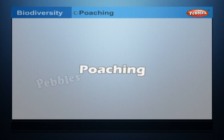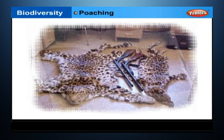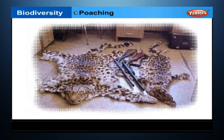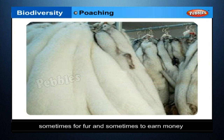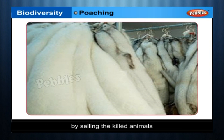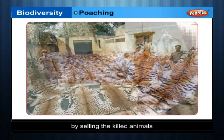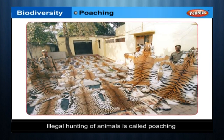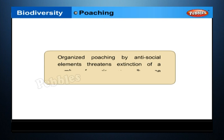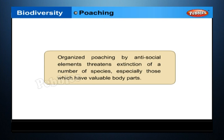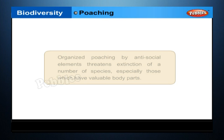Even though steps are being taken for protection of animals, some people still hunt and kill animals — sometimes for fur and sometimes to earn money by selling the killed animals. Illegal hunting of animals is called poaching. Organised poaching by antisocial elements threatens extinction of a number of species, especially those which have valuable body parts.